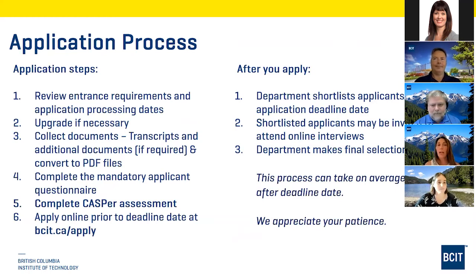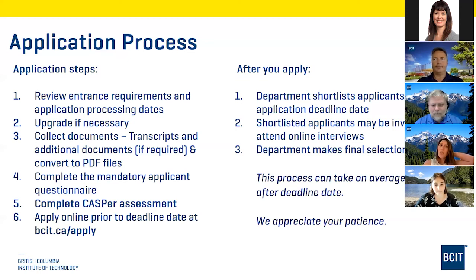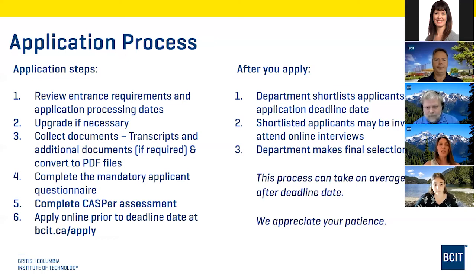To apply to BCIT, first ensure you have the entrance requirements and know your processing dates and deadlines. If you need to upgrade, do that. Collect your documents and put everything in a PDF. The application process is entirely online at bcit.ca/apply — you don't need to mail a transcript. If you received a transcript by mail, open it, scan both sides, and convert it to a PDF document.